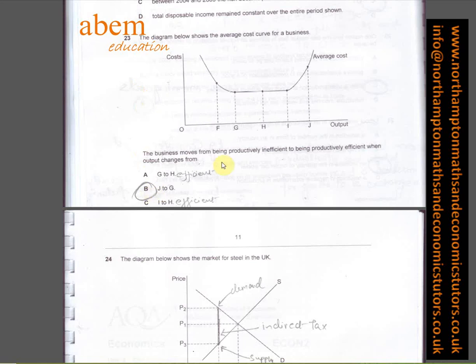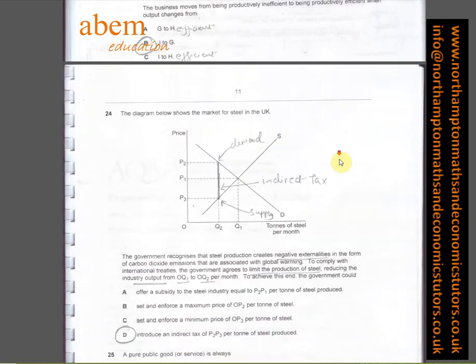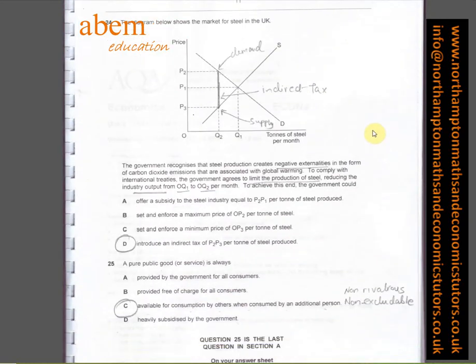In question number twenty-three, the diagram shows the average cost curve for a business. The business moves from being productively inefficient to being productively efficient when output changes from J to G. From J to G is the minimum efficient scale. So this is where the business should be operating.